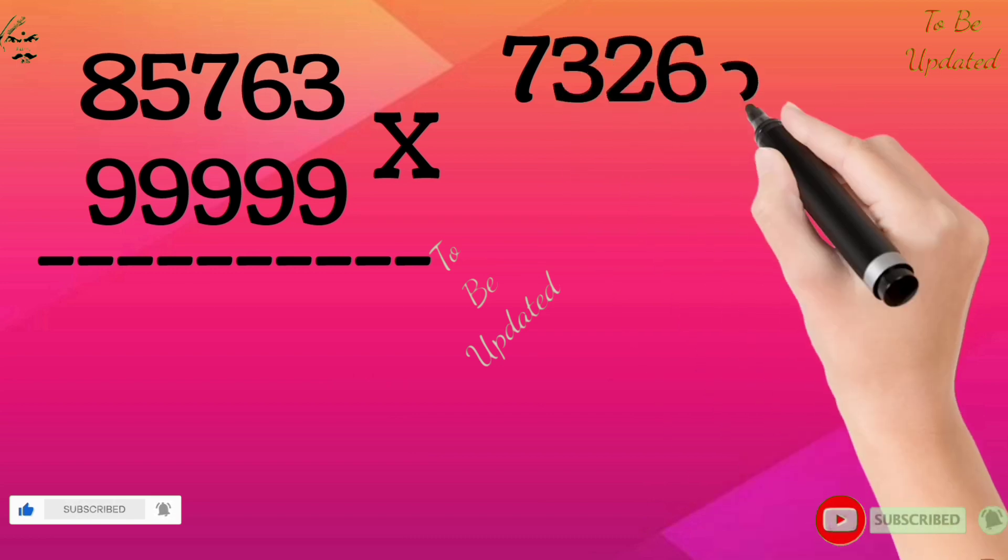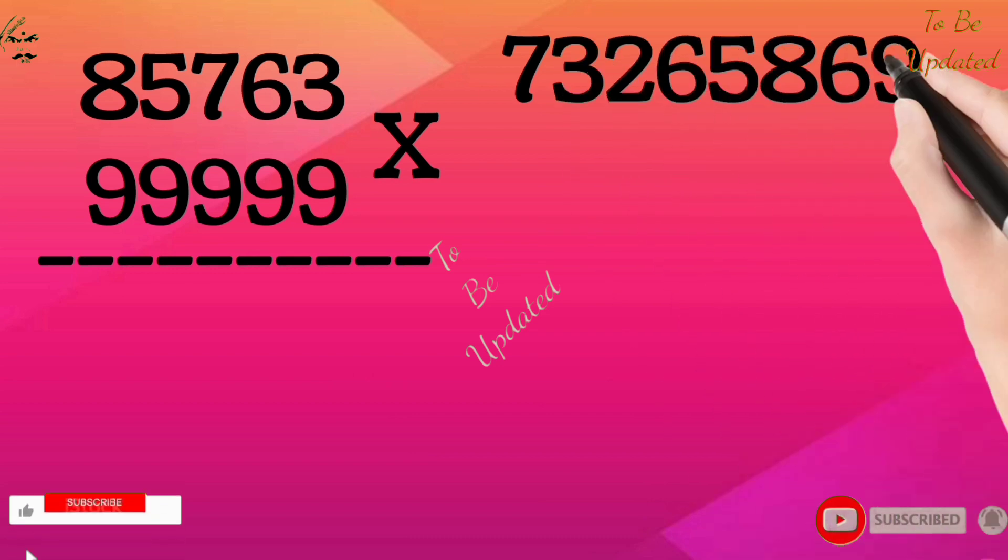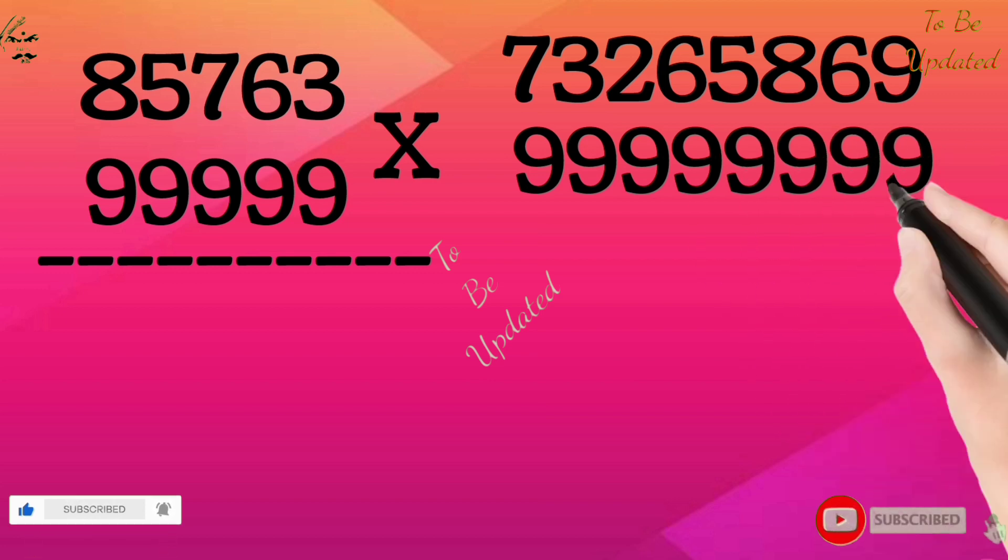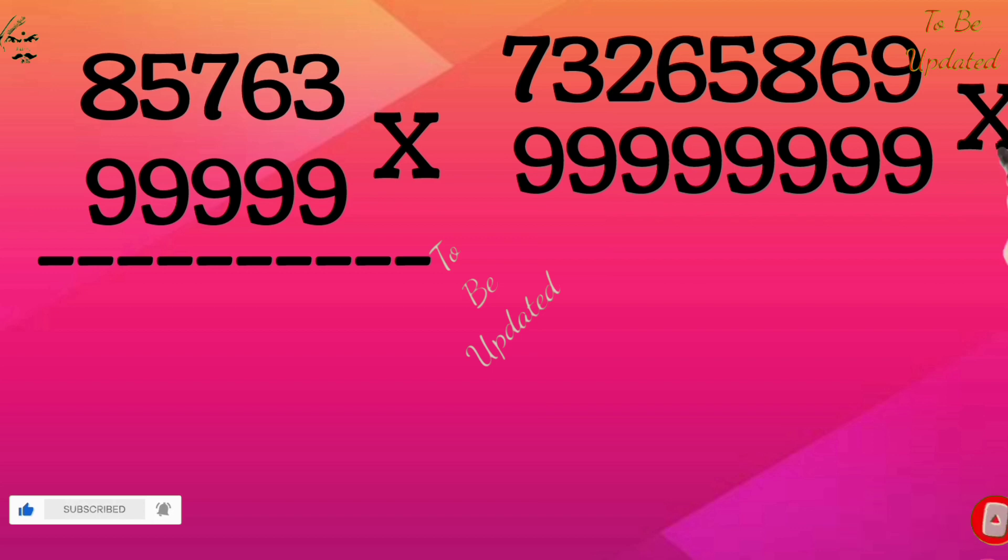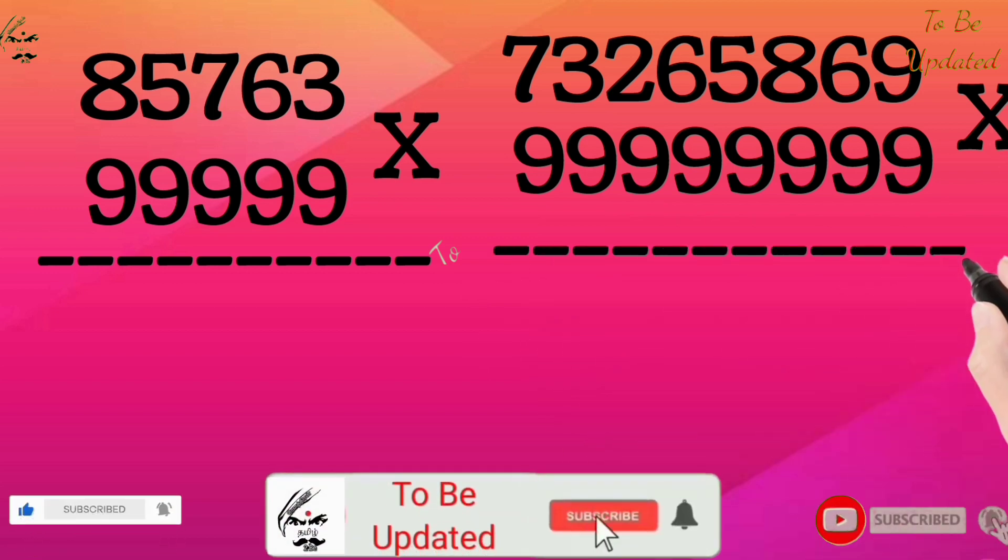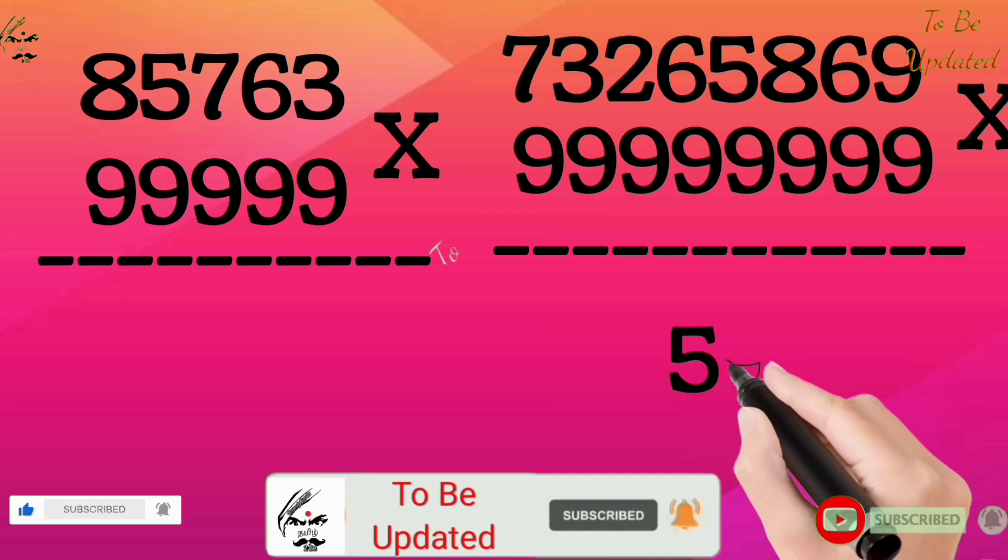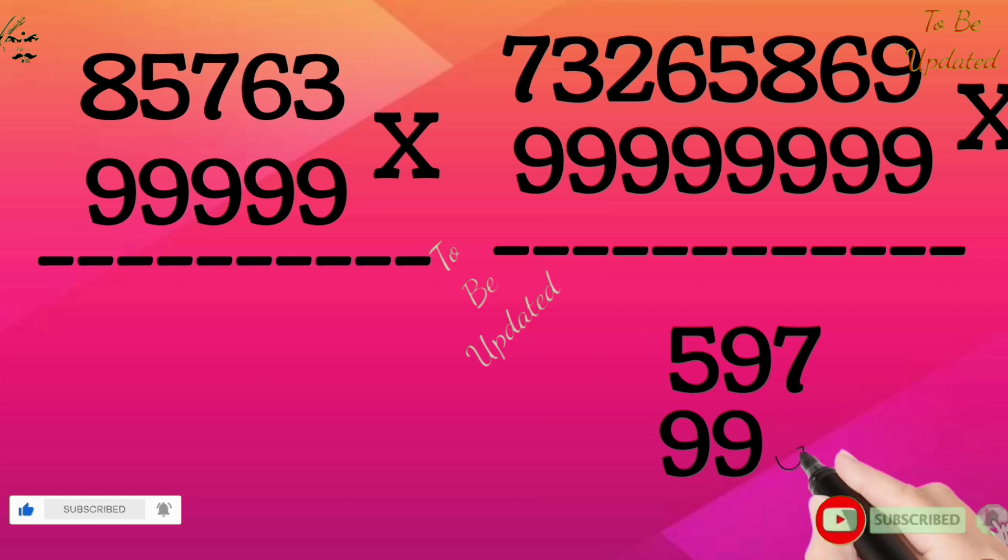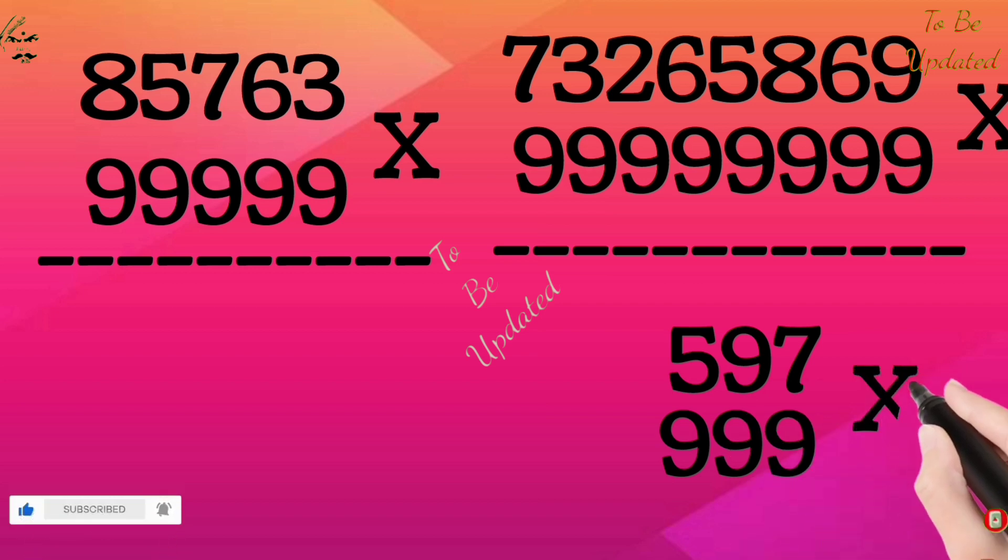First logic: the first number can be any number. The second number should contain only 9 in all digits. Second logic: digits of both numbers must be the same. If the first number has 5 digits, the second number also should contain 5 digits. If the first number has 3 digits, the second number also should contain 3 digits. If you understand this logic, then the concept is easy.